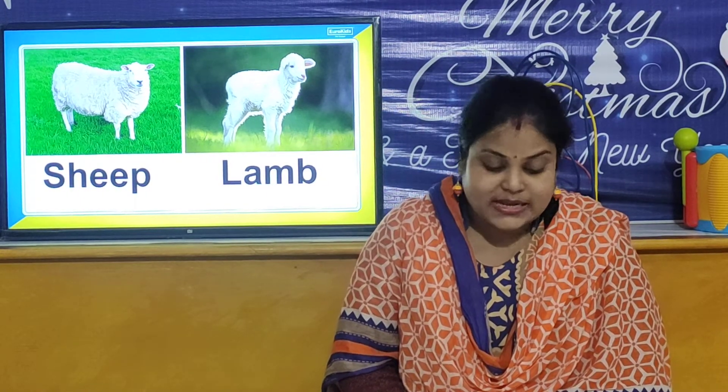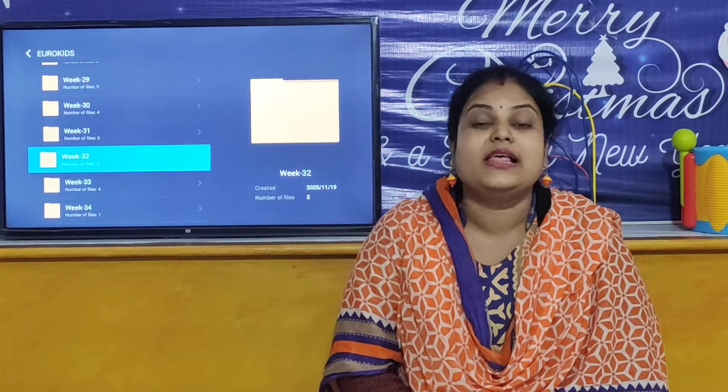In our next activity, we are going to review shapes. Let us look at the shapes. I will show you the shapes and you will tell me which shape is that. Look here — which shape is this? Round and round. This is circle shape. Round and round circle shape.